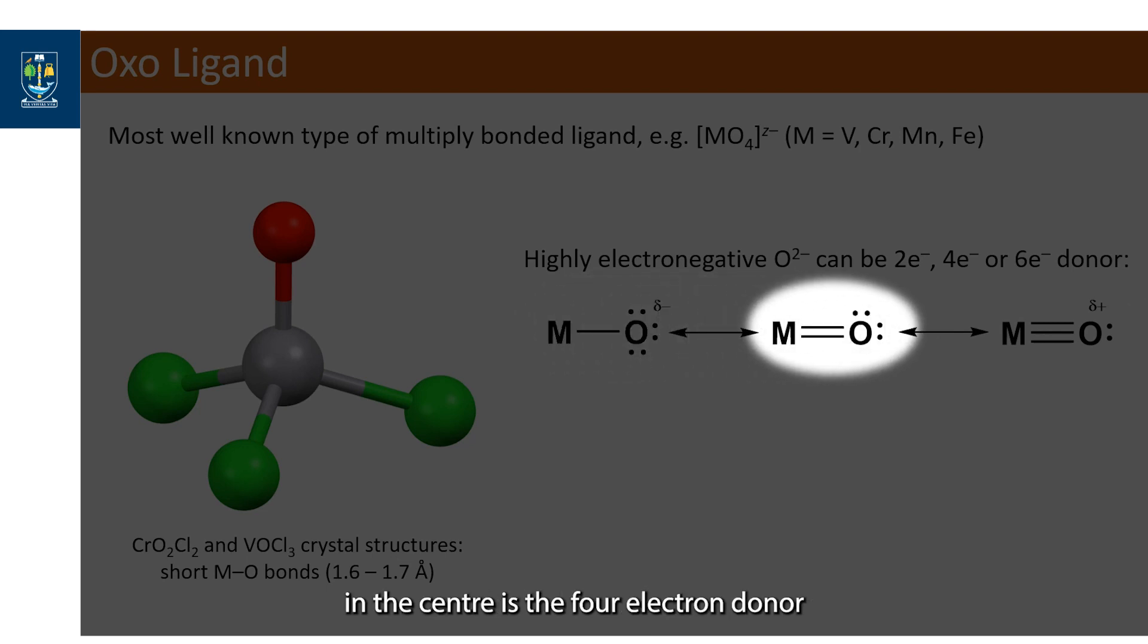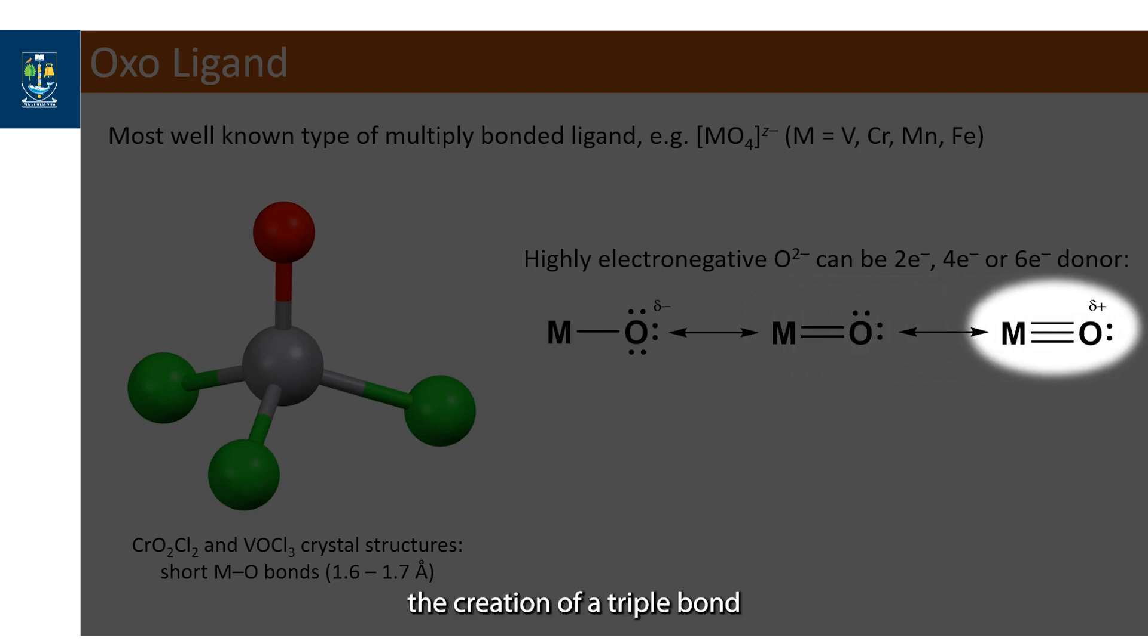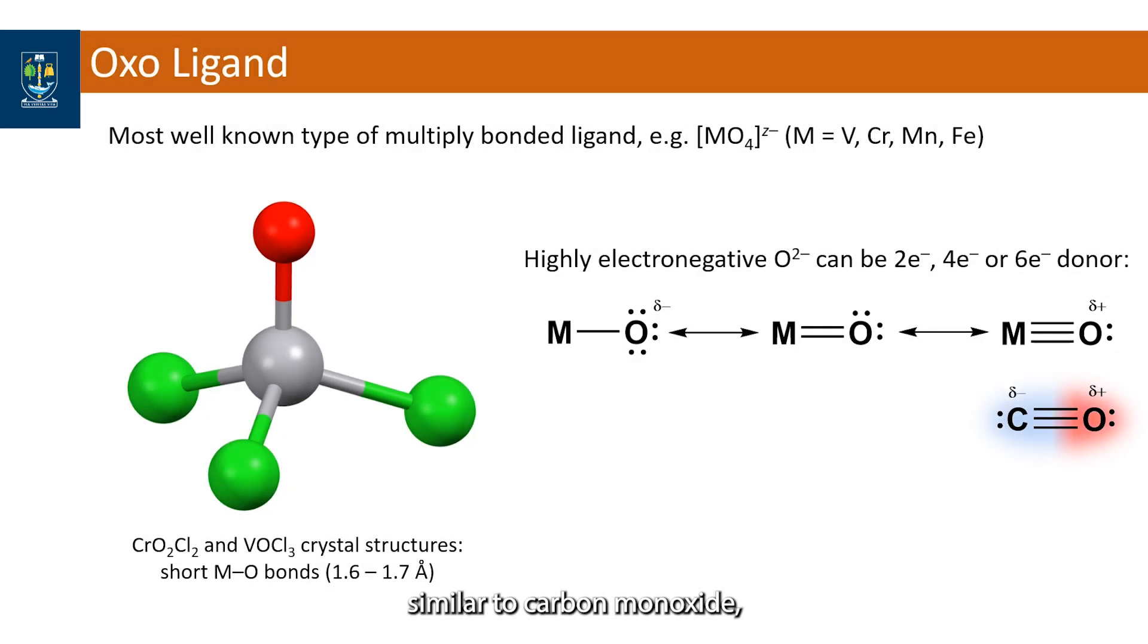In the center is the four electron donor, where another oxygen lone pair creates a second bond to the metal ion. The final tautomer is the creation of a triple bond by moving an oxygen lone pair into the mix. This tautomer is very similar to carbon monoxide, where the triple bond makes the oxygen atom delta plus, despite it being more electronegative.